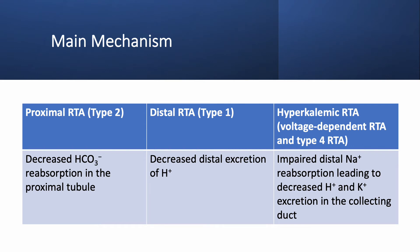What is the main mechanism? In proximal or type 2 RTA, we have decreased bicarbonate reabsorption in the proximal tubule. In distal renal tubular acidosis, we have decreased distal excretion of hydrogen. With hyperkalemic RTA, which has two types — voltage-dependent and type 4 RTA — we have impaired distal sodium reabsorption. This leads to decreased hydrogen and potassium excretion in the collecting duct, resulting in both hyperkalemia and acidosis. In all three types, we have non-anion gap metabolic acidosis.